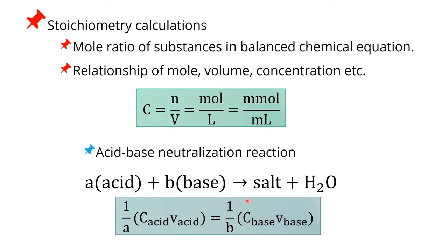Next, we are going to talk about titration and pH during the titration. Stoichiometry calculations are important as well. You need to understand the mole ratio of substances in the balanced chemical equation. The relationship between number of moles, volume, and concentration of solution is very important. Most of the time we work with concentration in molarity, which equals number of moles divided by volume of the solution in liters.